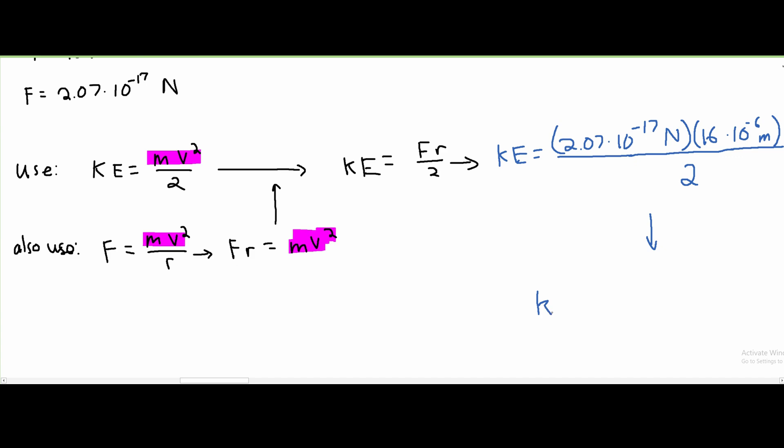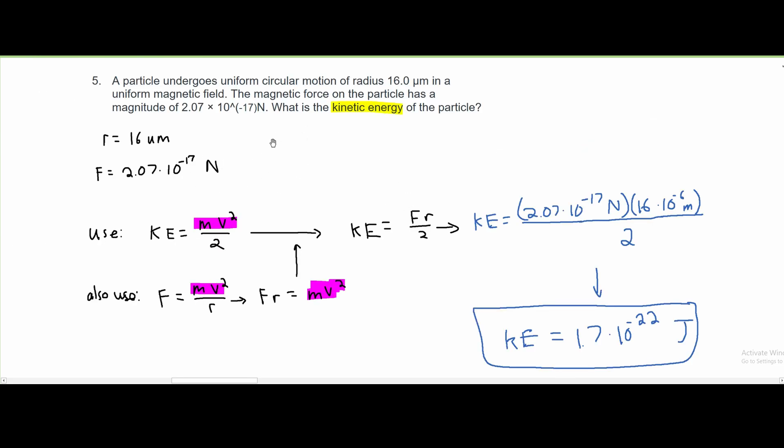So after we plug this into our calculator, we're going to get the answer of approximately 1.7 times 10 to the negative 22, and this is going to be measured in joules. That is the answer for number 5.